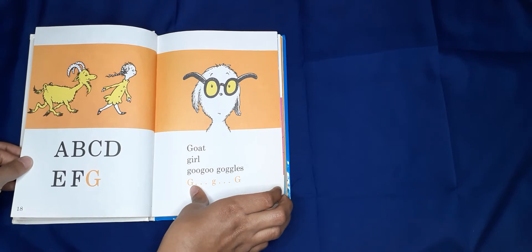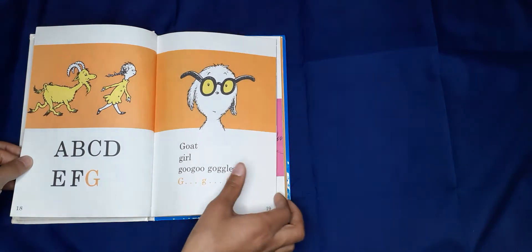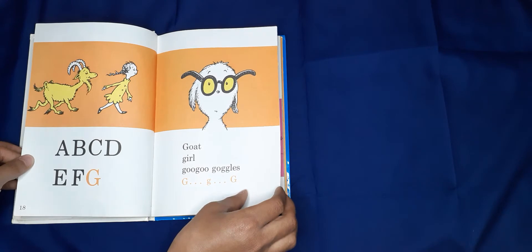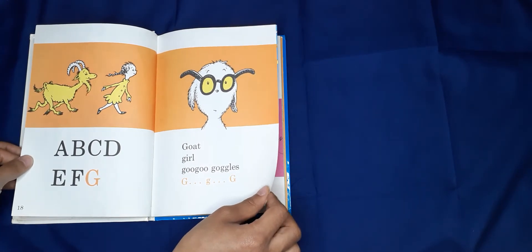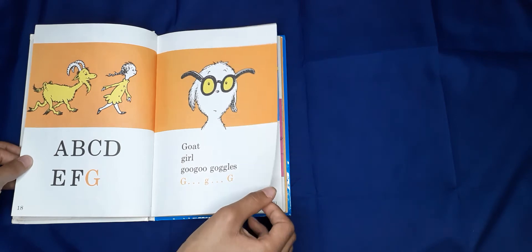A, B, C, D, E, F, G. Goat, girl, goo goo gobbles. G, G, G.